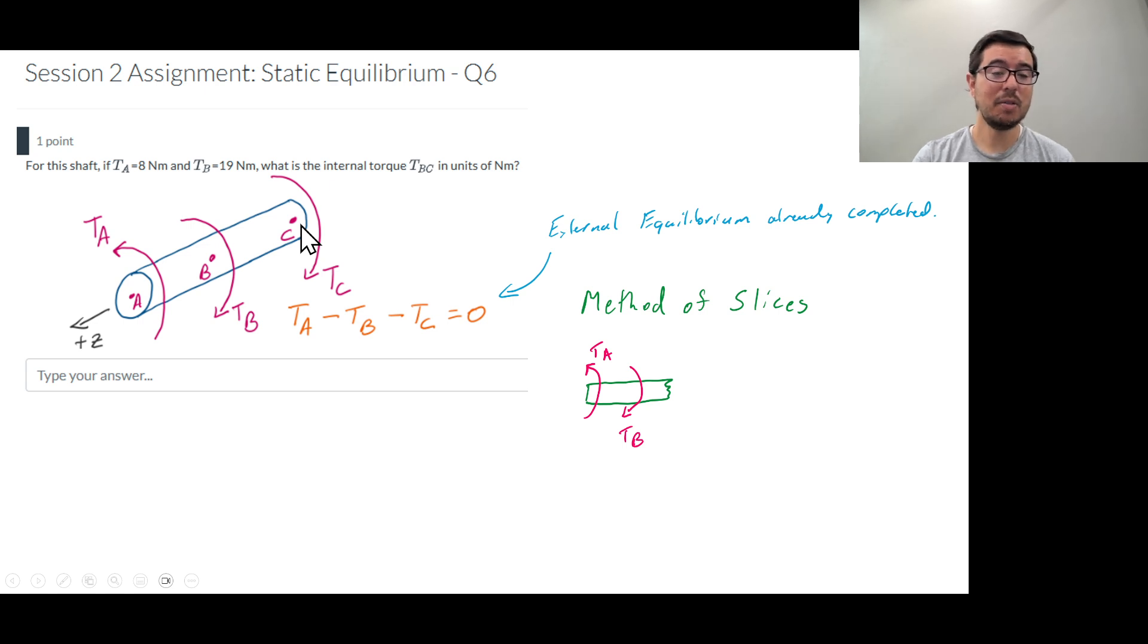Is this the simplest way to do it? Maybe not, because just like we've seen in bars if I were to cover up the left portion, then I would just have a torque C and an internal torque BC. Nonetheless we're going to go ahead and cover up the right section.